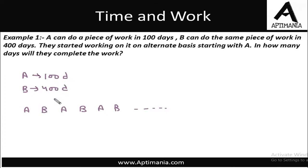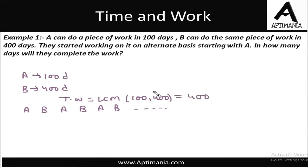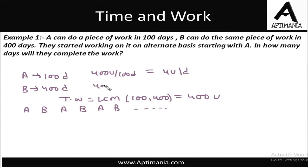We will assume the total work is the LCM of 100 and 400, which is 400. So the total amount of work is 400 units. A was completing these 400 units in 100 days, so A was doing basically 4 units of work per day. Similarly, B was doing 400 divided by 400, that is 1 unit of work per day.